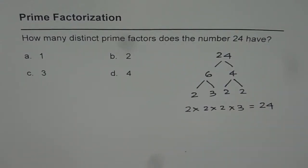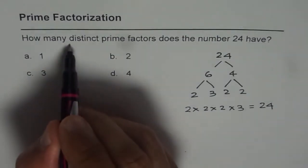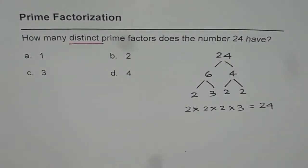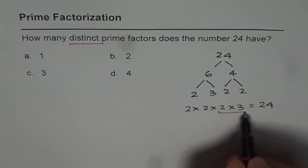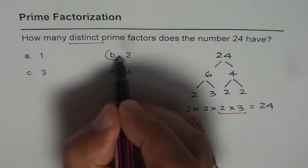Now the question is how many distinct prime factors. So the word distinct. We have only two distinct prime factors which are 2 and 3 and therefore the solution is part B.